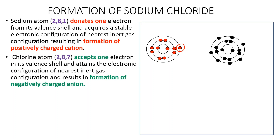Similarly, the chlorine atom, which has got seven electrons in its outermost shell, tends to gain the electron lost by the sodium atom. This results in formation of a chloride ion and attains the stable electron configuration of the nearest zero group, i.e. argon. So there is a transfer of electrons from sodium to chlorine.